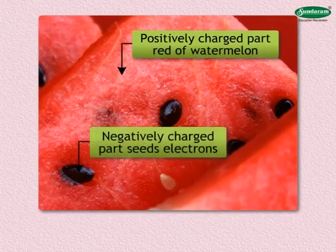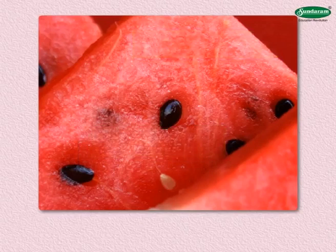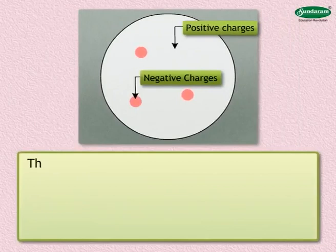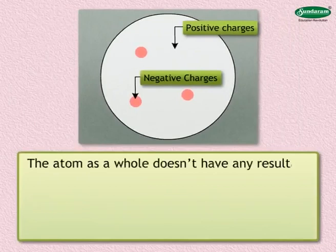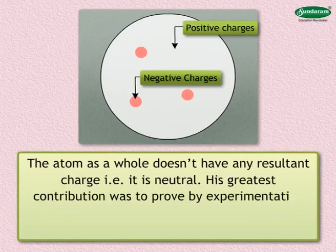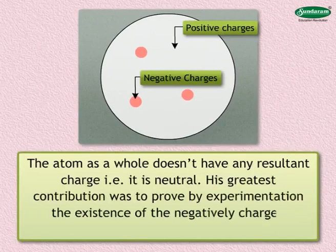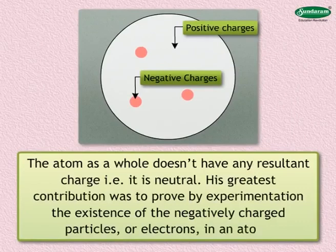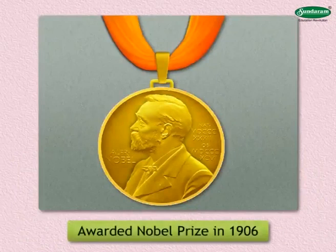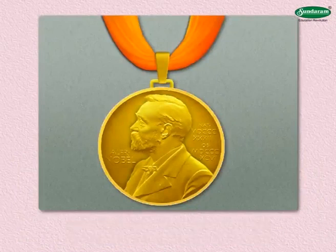And the atom has negatively charged particles like the seeds, which he named electrons. According to Thompson's theory, as the positive and negative charges are equal, the atom as a whole doesn't have any resultant charge — that is, it is neutral. His greatest contribution was to prove by experimentation the existence of negatively charged particles, or electrons, in an atom. For this discovery he was awarded the Nobel Prize in 1906.